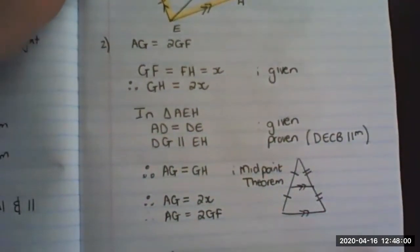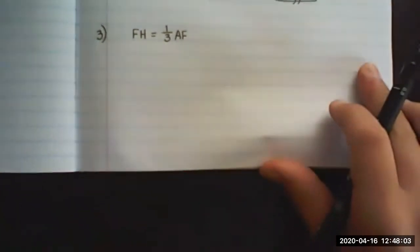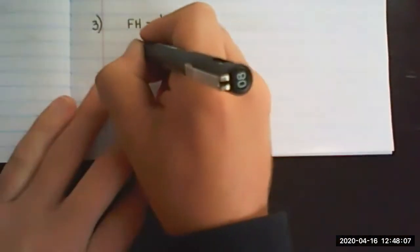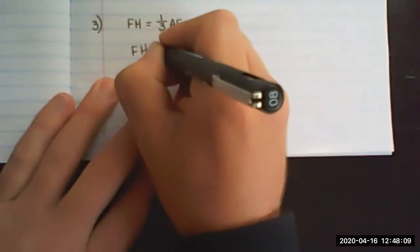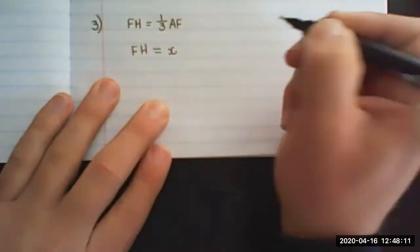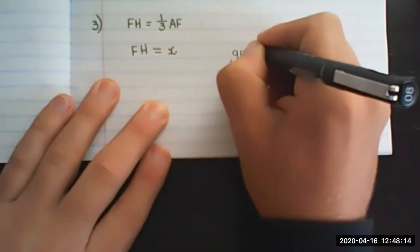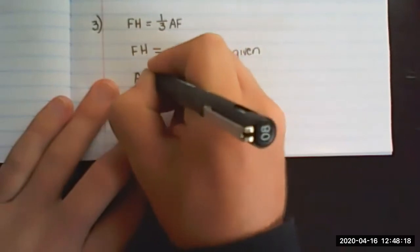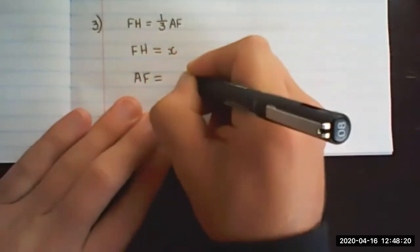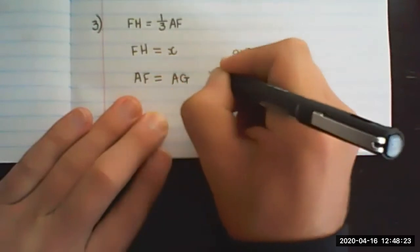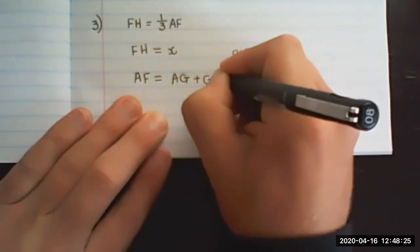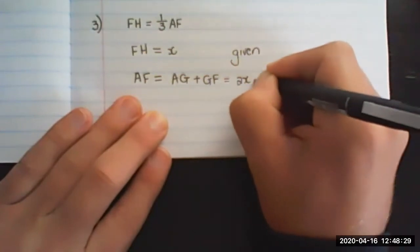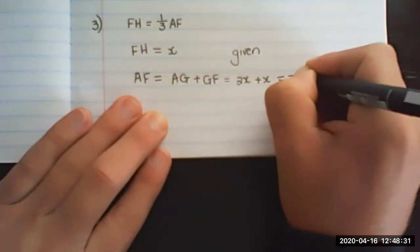But the way we write it is like this. We say FH is equal to x, we have been given that information. And then we can say AF is equal to AG plus GF, which was 2x plus x, which makes it 3x.